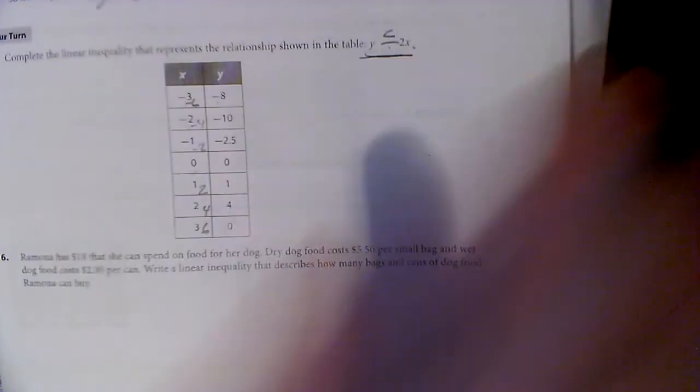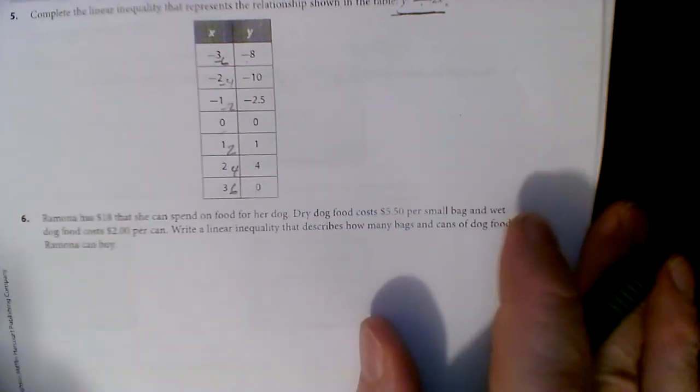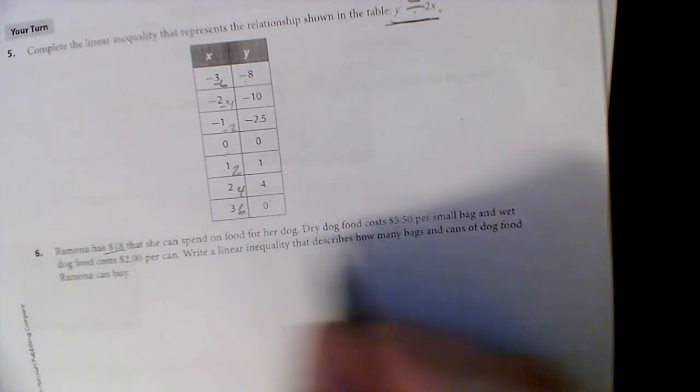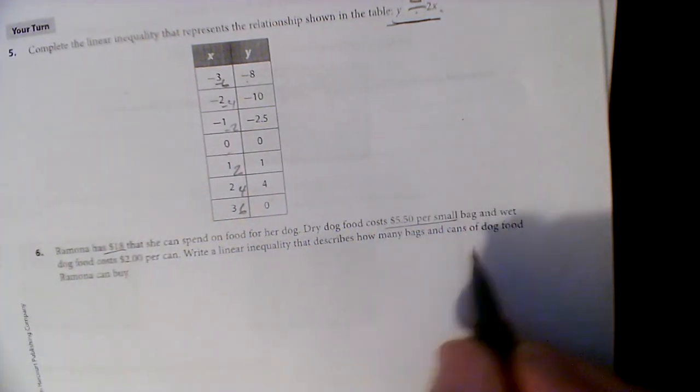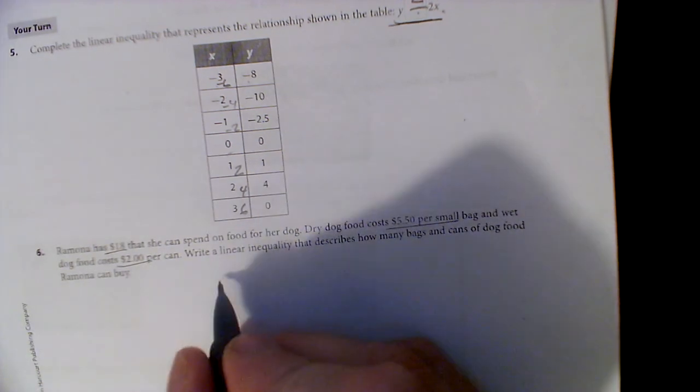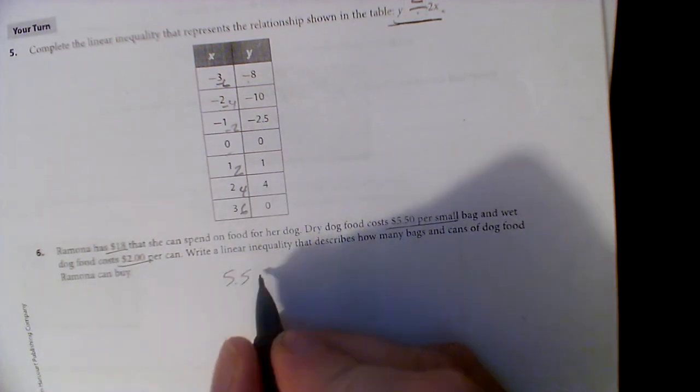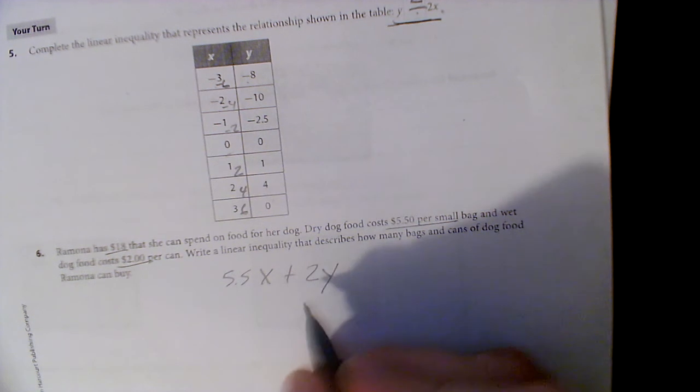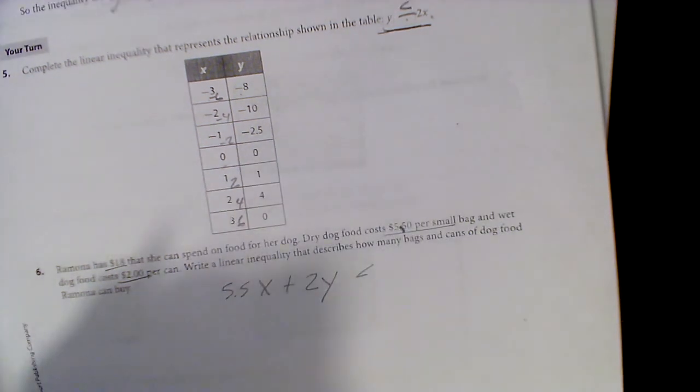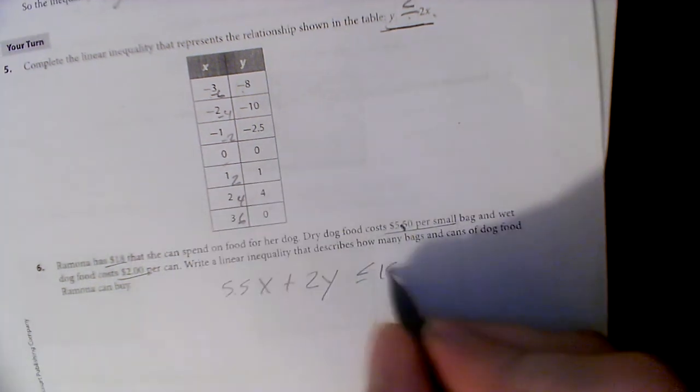You got a problem here, it's kind of important. Ramona has $18 that she can spend on food. Dry food is $5.50 a bag and wet food is $2 per can. So I'm going to say $5.50 a bag plus $2 a can is less than or equal to 18.